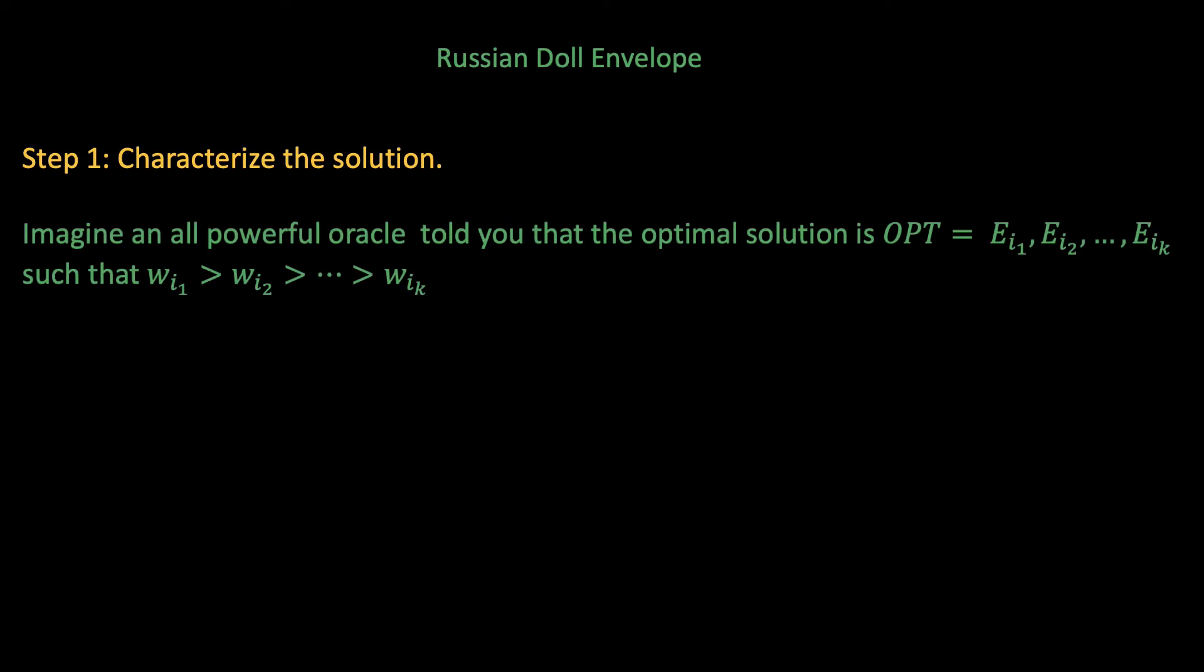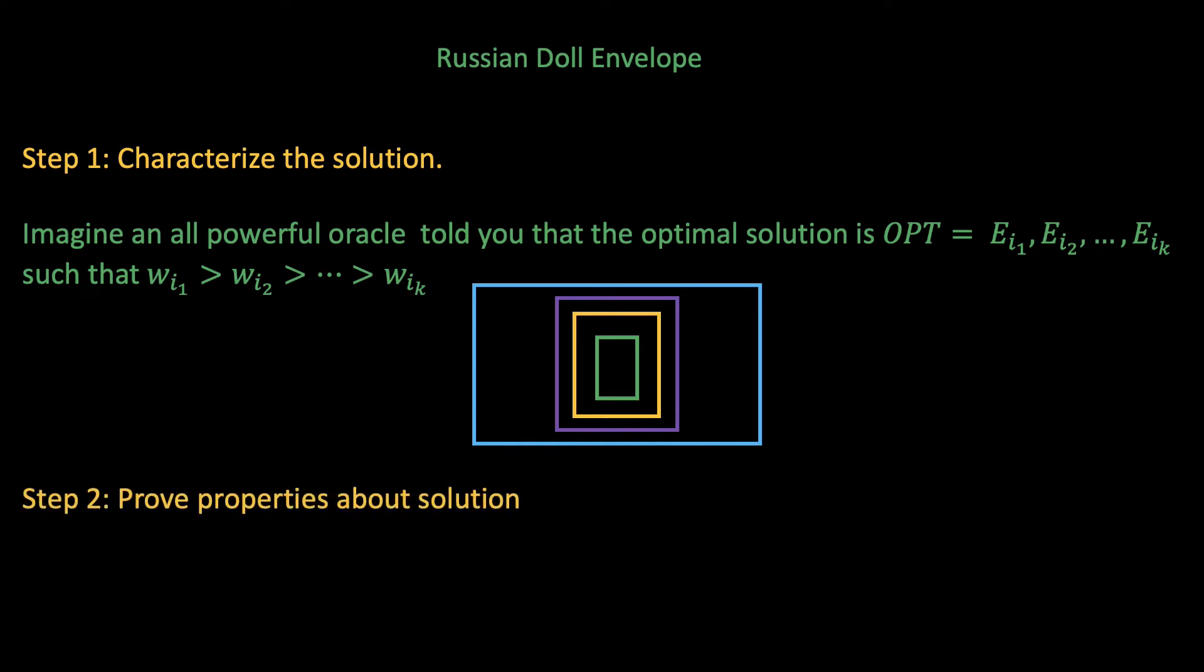Now when dealing with problems like this, a very useful step is to start by characterizing the optimal solution. This is just a fancy way of saying to imagine that an oracle allowed you to peak at the optimal solution. So suppose the oracle gave you indices i1 to ik and told you that envelopes ei1 to eik are the optimal envelopes and that they are in descending order of width. The second step is to try to prove some structural properties on the optimal solution.